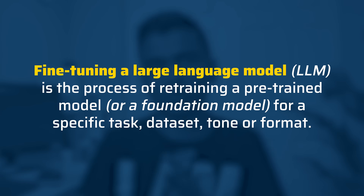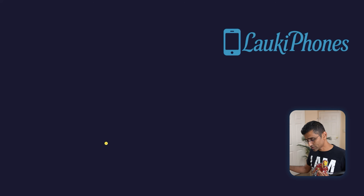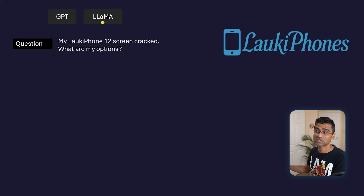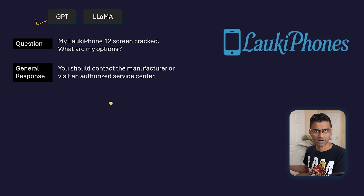In that situation you would use LLM fine-tuning. LLM fine-tuning is the process of retraining a pre-trained model such as LLaMA on a specific task, dataset, tone, and format. Let's take an example of an imaginary company called Loki Phones. You're building a chatbot for this company using models such as GPT and LLaMA, and a customer asks a question.